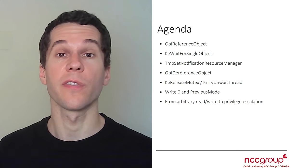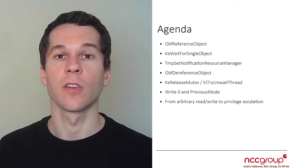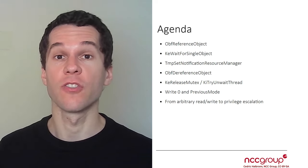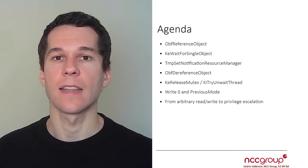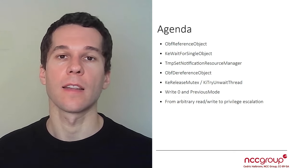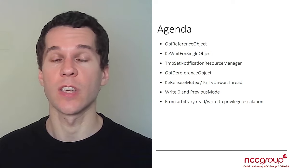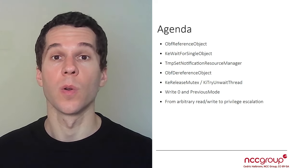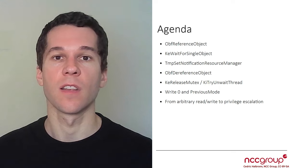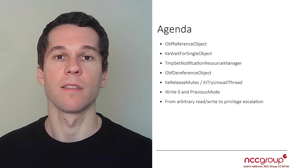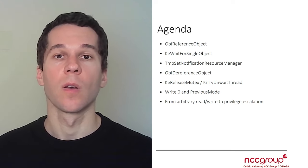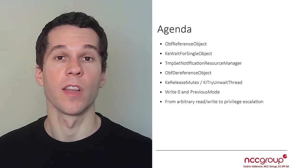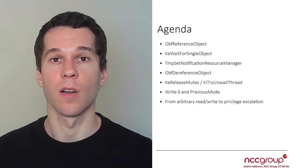We are going to go over all the different functions being called in order to see which one we can abuse to get an actual write primitive to an arbitrary kernel address. Once we've done that, we'll see that one of them allows us to get a write-zero primitive to an arbitrary address we control. We'll investigate how we can abuse a specific field called previous mode — when it's set to zero, it gives us a really good primitive. And once we have that, we'll investigate how we can use this arbitrary read-write primitive to actually elevate our own privilege by modifying the token of our process.